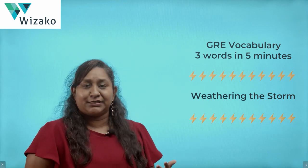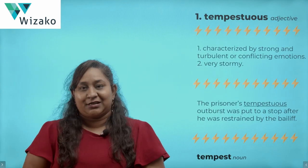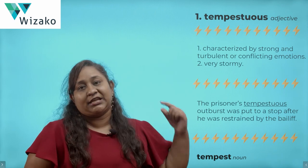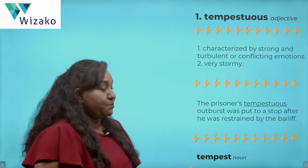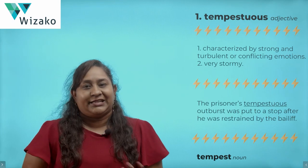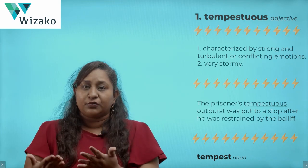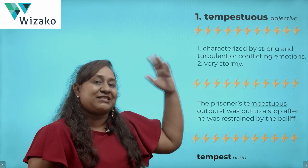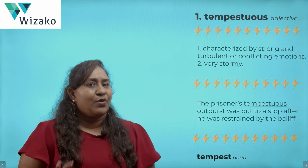Words that are associated with the storm. The first of the words in our list is 'tempestuous' in an adjective form and 'tempest' in the noun form. We know that the word tempest is often used to refer to a storm, so tempestuous as an adjective means very stormy.